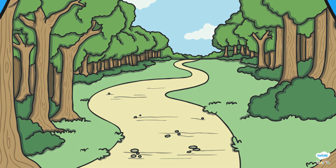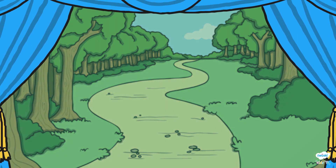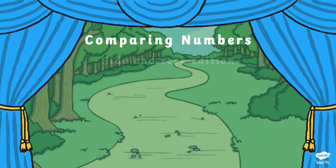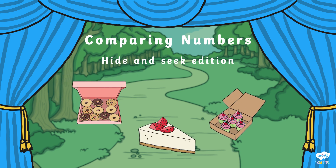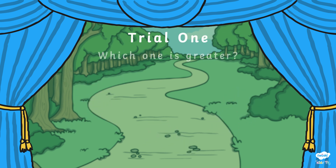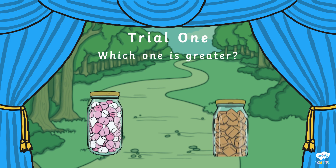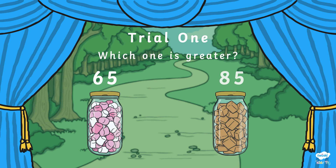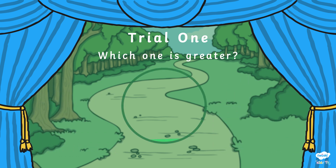Can you help Crock-8 find his friend in the ultimate hide-and-seek game? His friend has left him different treats along the way, which he can only eat if he can guess which number is greater. Are you ready for trial one? There are two jars, one with marshmallows and one with fudge. How do you work out which jar has the greatest amount of sweets, and how would you show this?